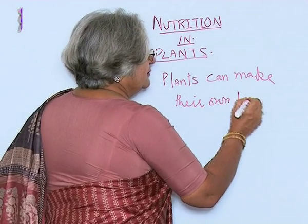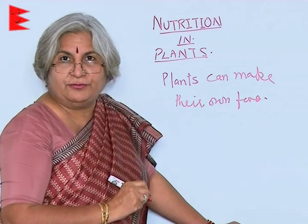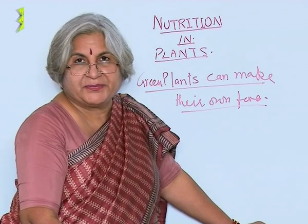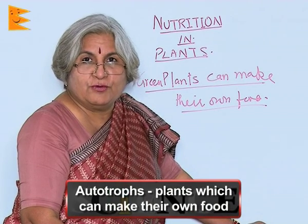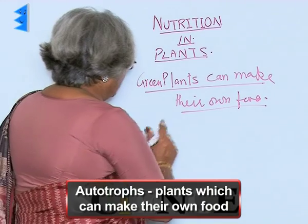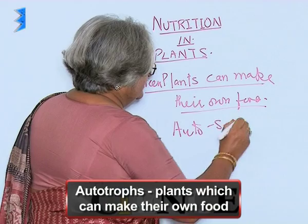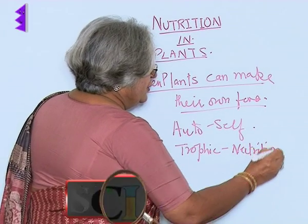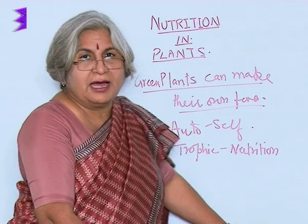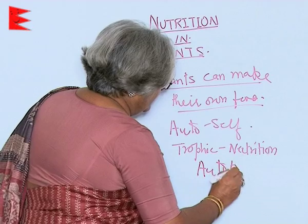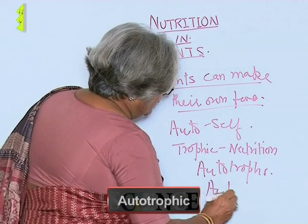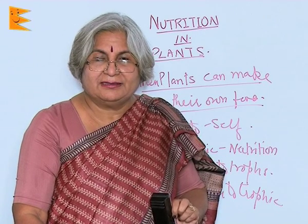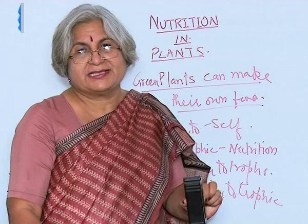Can all plants make their own food? No. Which plants can make their own food? Green plants. Now why only green? We will come to that a little later. The plants which can make their own food are called autotrophs. The word auto means self, and trophic pertains to nutrition. So those organisms which can make their own food are called autotrophs and their nutrition is called autotrophic.